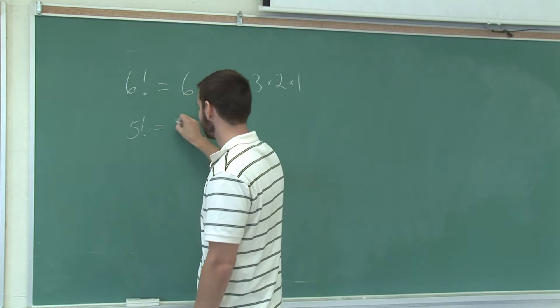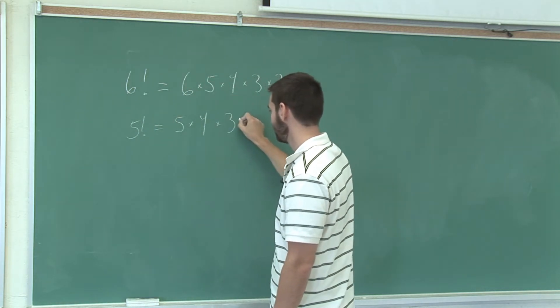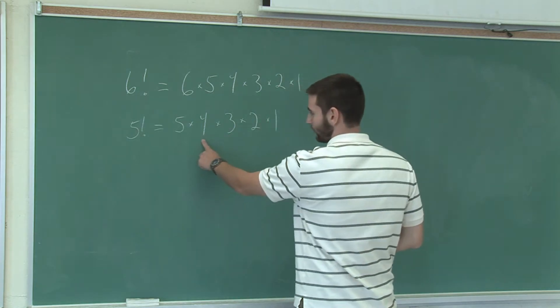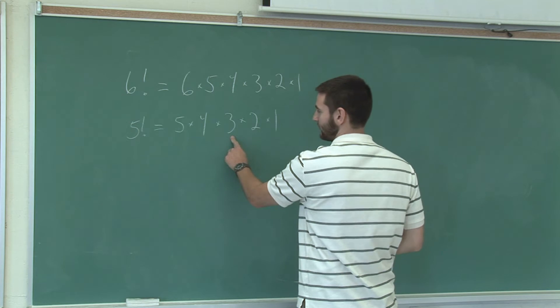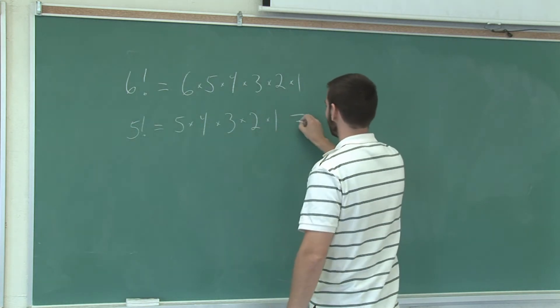5 factorial is 5 times 4 times 3 times 2 times 1. 5 times 4 is 20, times 3 is 60, times 2 is 120, times 1 is still 120.